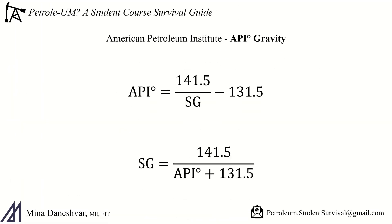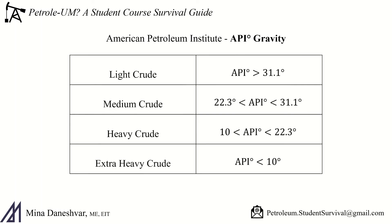The American Petroleum Institute introduced their own unit of measure for the gravity of a crude. They use the degree symbol to denote the unit, and it's directly related to the specific gravity, as seen here. Crudes can be lumped into categories based on these API gravities, and you'll be seeing these values a lot — they're a big indication of what's going on in a fluid.